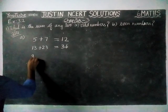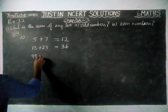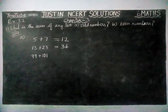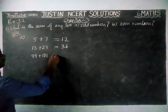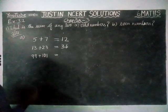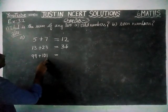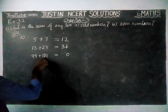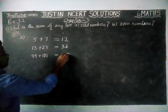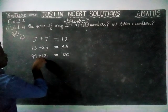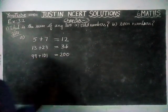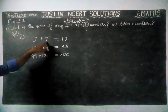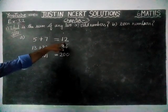Next, we will take 99 plus 101 — two odd numbers. We will check what answer is coming. 99 plus 101: 9 plus 1 is 10, carry 1; 0 plus 9 is 9, plus 1 is 10, carry 1; 1 plus 1 is 2. So 99 plus 101 is equal to 200, which is an even number. When we added 5 plus 7, two odd numbers, we got an even number.